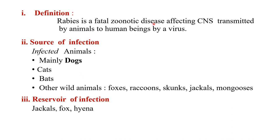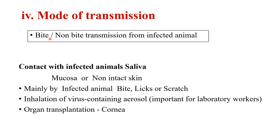If a jackal enters a village and bites or injures a dog, the dog will get affected by rabies and then become the source to transmit it. Mode of transmission can be bite or non-bite transmission from infected animals. Contact with infected animal saliva on mucosa or non-intact skin — mainly by bite, licks or scratch — is important. Scratches are included because dogs lick their paws, contaminating them. Rabies is almost always fatal, hence this precaution.